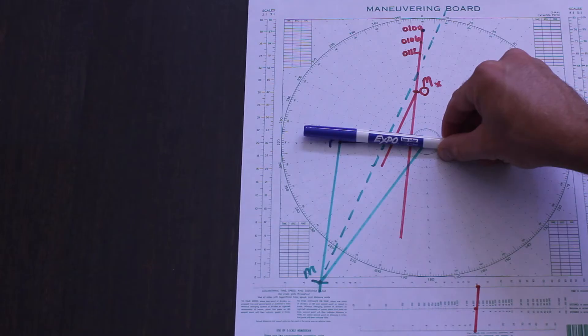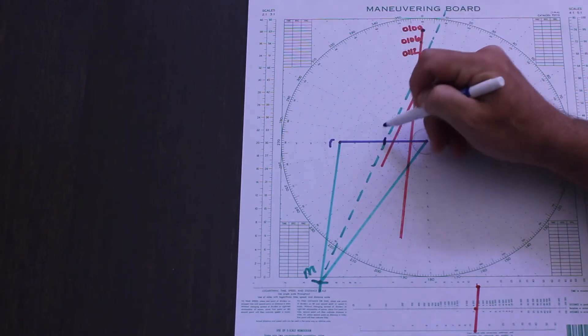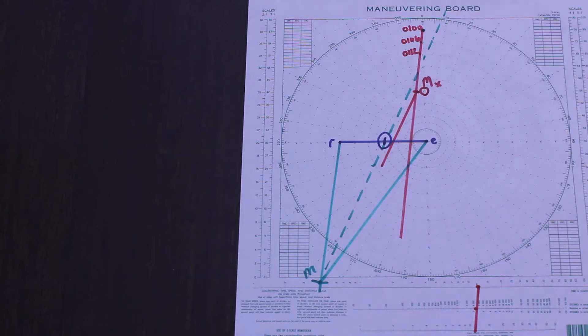We could turn south, but that probably wouldn't be in accordance with the rules. Even better, we can keep our own course but slow down to 3 knots, and then our desired CPA of 2 nautical miles will come true.